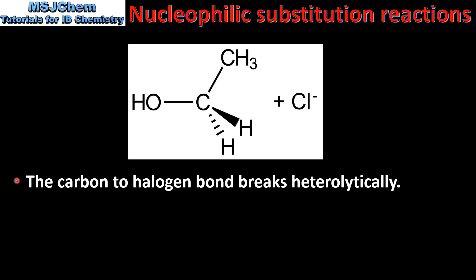The carbon to halogen bond breaks heterolytically. This produces the chloride ion, as both the electrons in the carbon to halogen bond are taken by the leaving group.